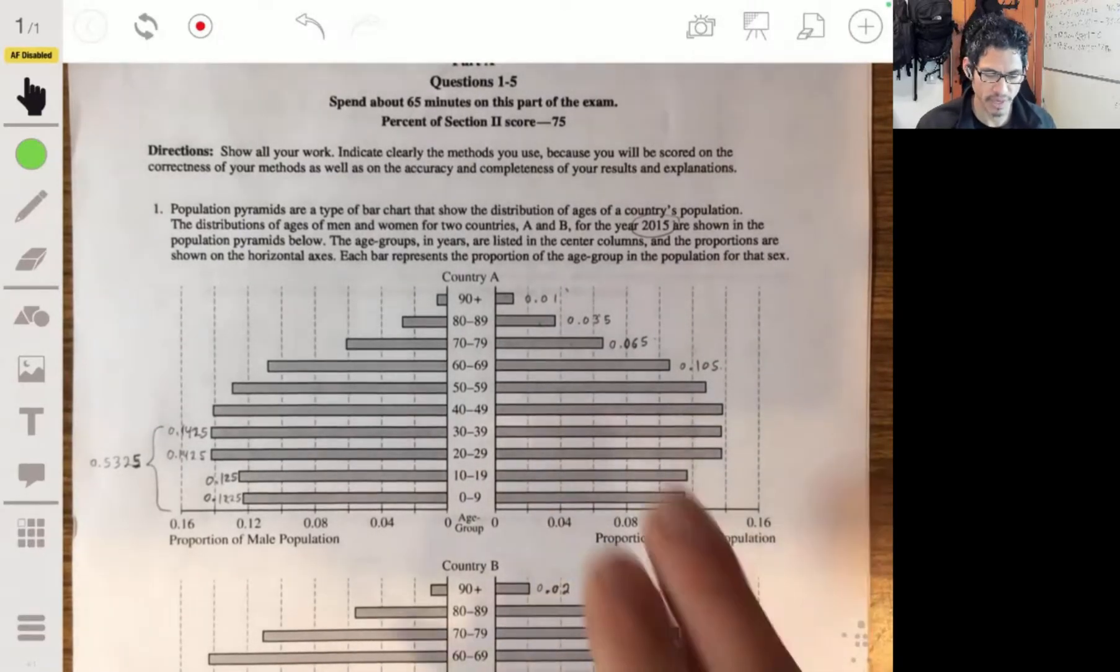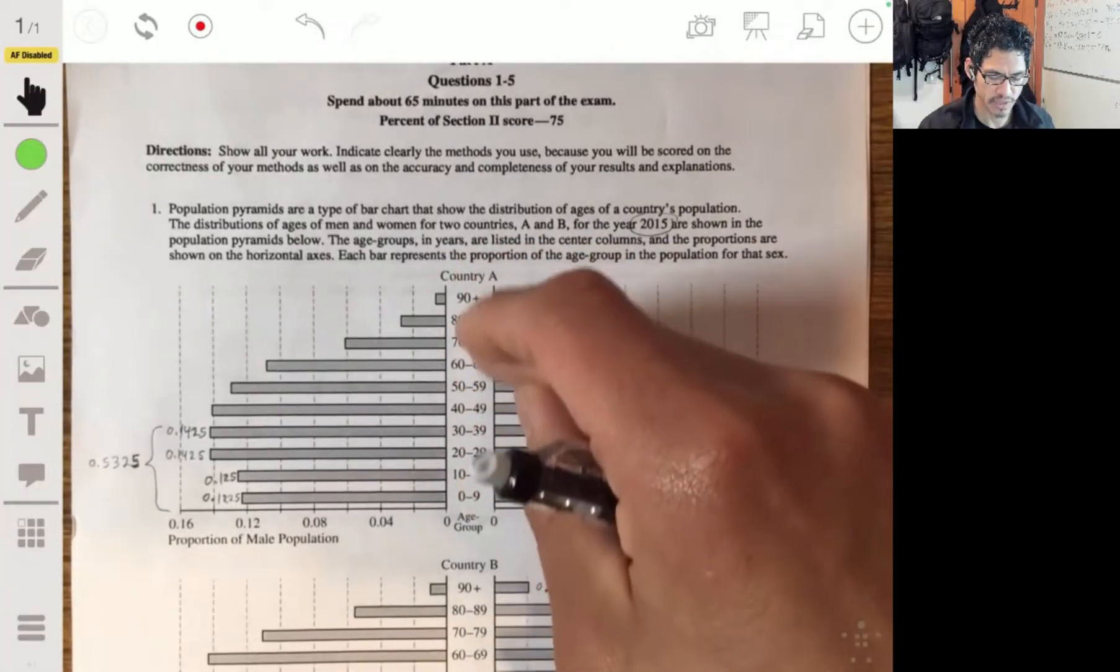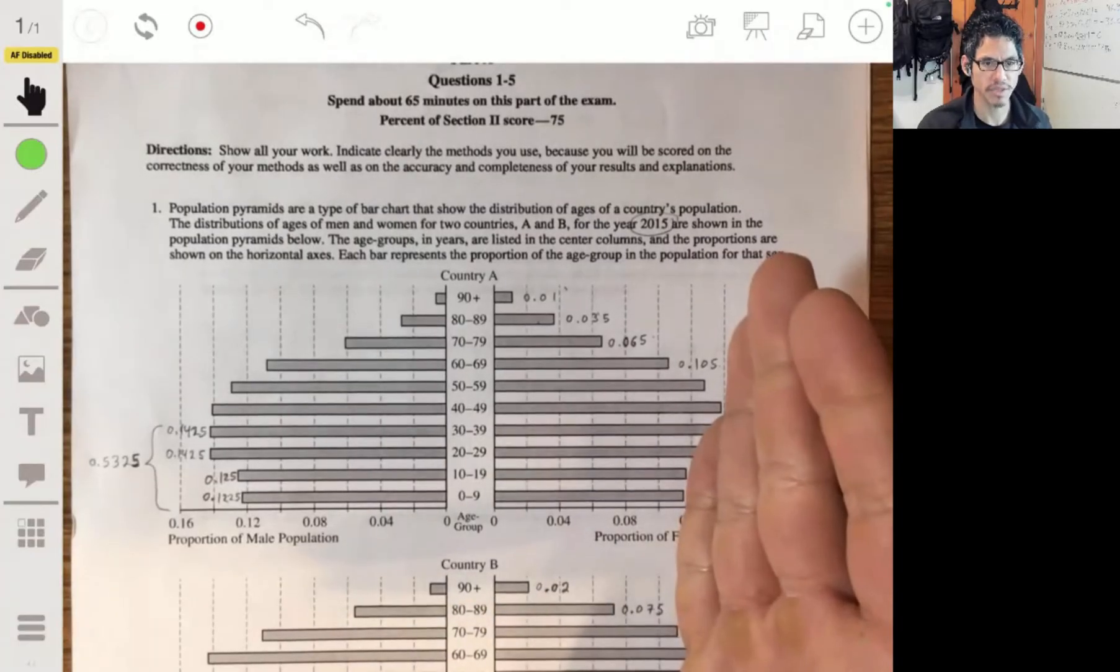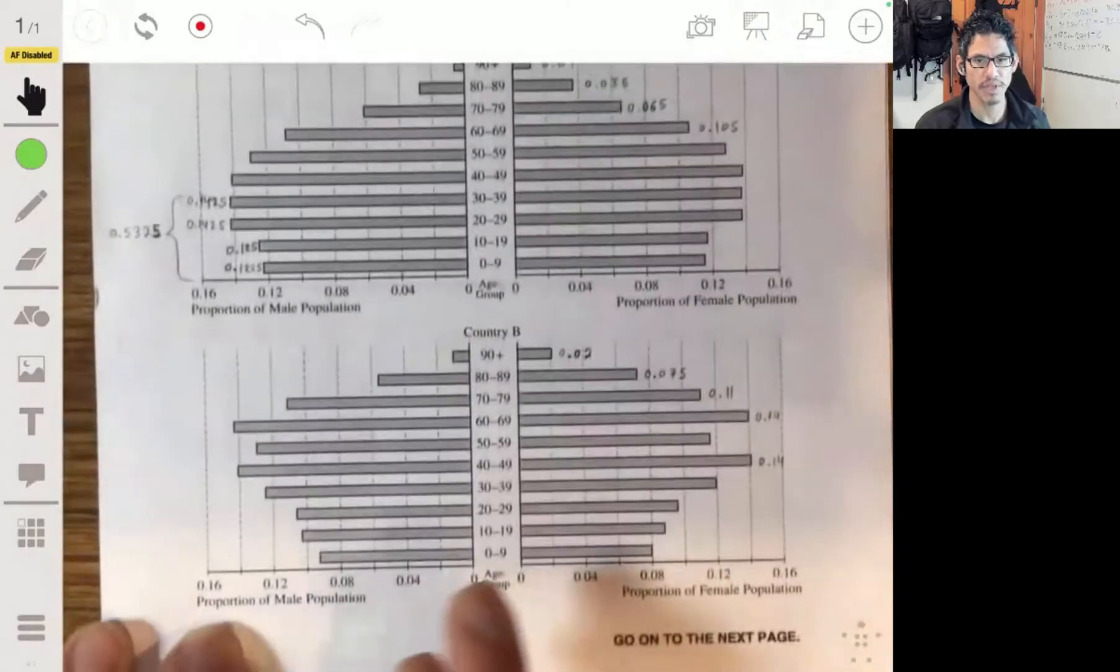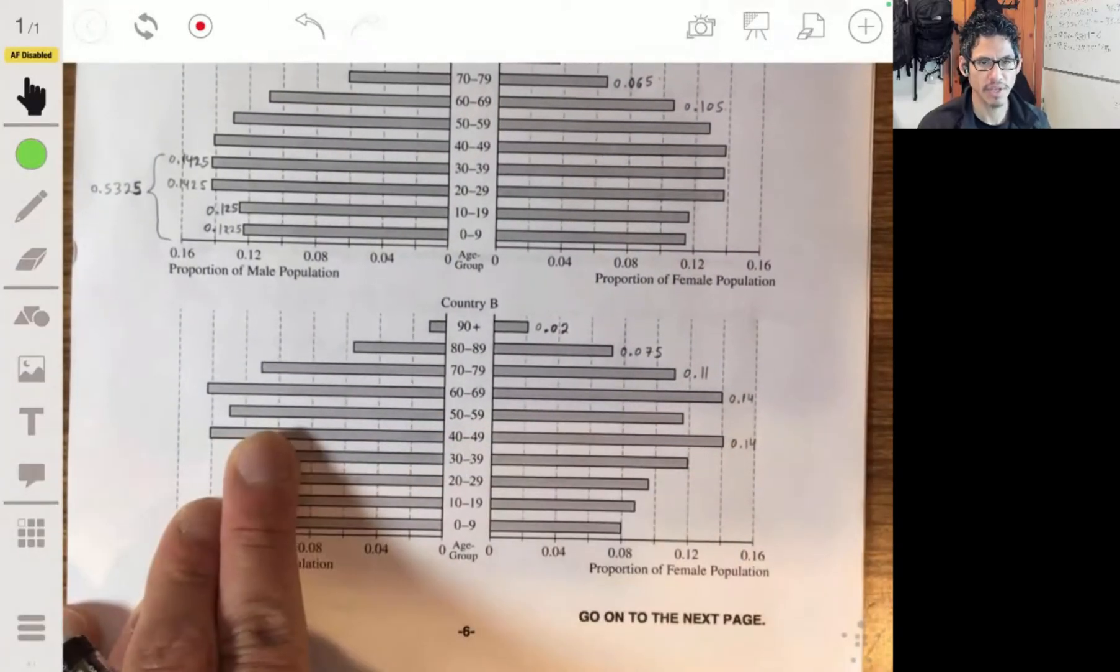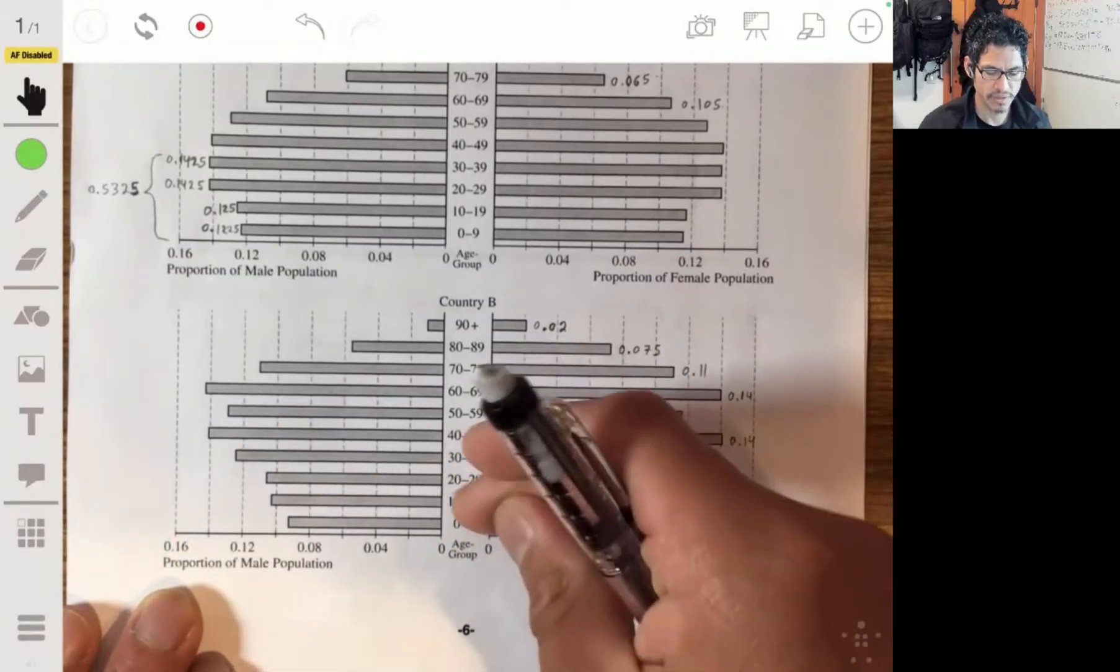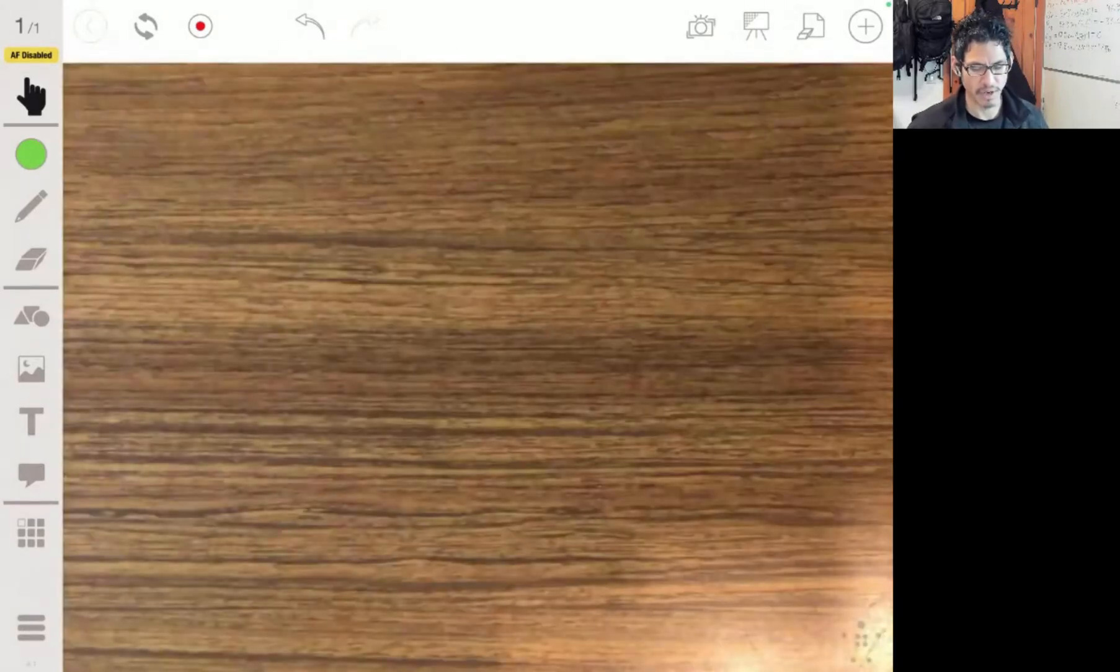Each bar represents the proportion of the age group in the population for that sex. So here we have country A, broken into age groups for about 10 years, female populations on the right, and the male populations on the left. And here's country B, same thing, female on the right, male on the left, same scale, same age groups. So let's look at question part A.